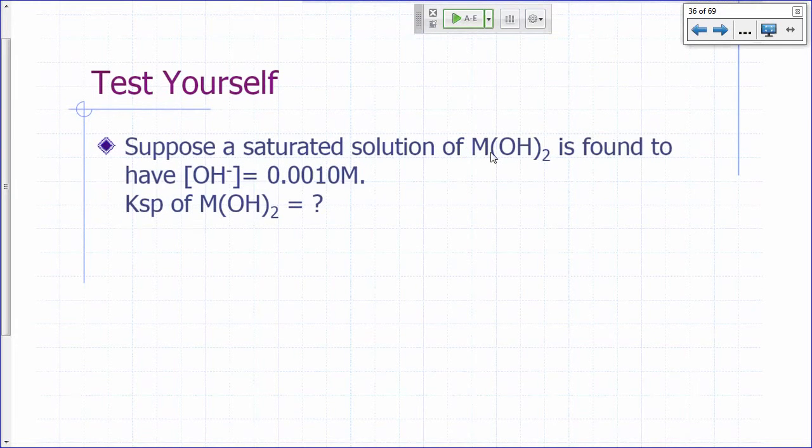Let's say you have a saturated solution of M(OH)₂, and you found you have hydroxide concentration of 0.0010. What's the Ksp of M(OH)₂? So what reaction are we looking for here?